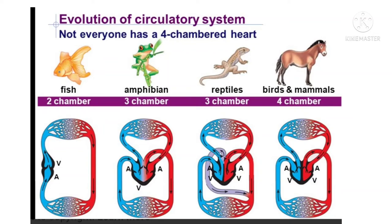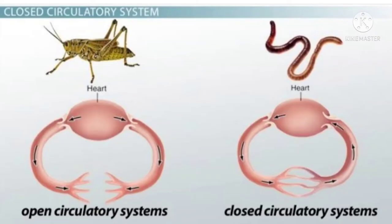In Arthropods, a pulsatile organ — the heart — is developed to pump the blood. The blood, instead of flowing in blood vessels, bathes the tissues directly, supplying nutrients to the tissues. Oxygen is directly supplied to the tissues by the respiratory system. This is called an open circulatory system. The best examples of open circulatory system are arthropods and mollusks.